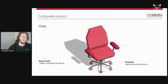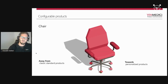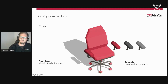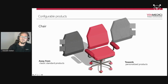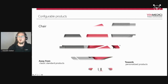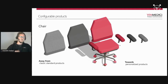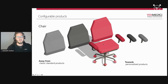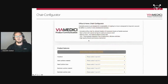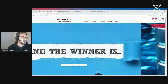My example is the chair. We have to move away from classic standard pre-configured products towards personalized configurable products. In this example, we have different armrests — without armrest, a red one, a gray one, and a black one — and different seat cushion materials like leather and fabric, with different colors. For all of this we need rules, because manually maintaining all variants is not feasible.